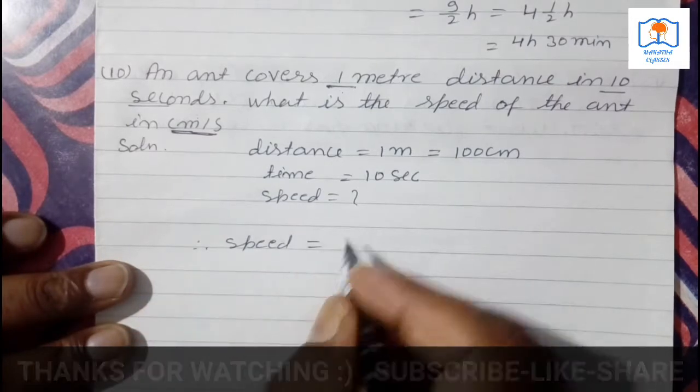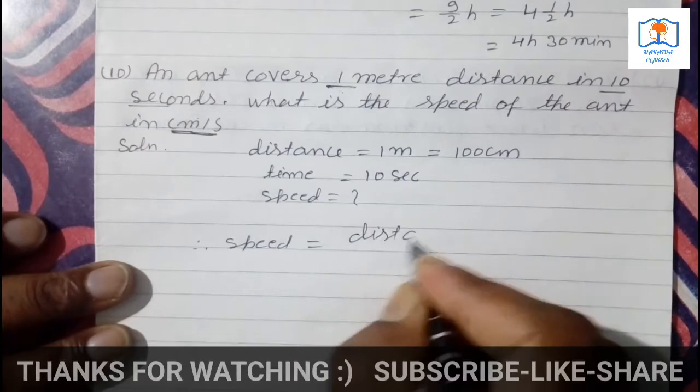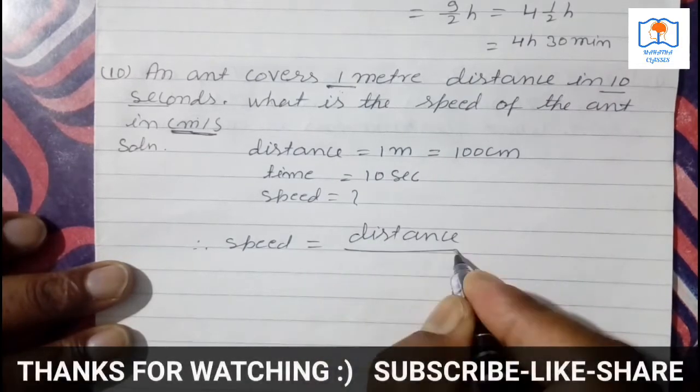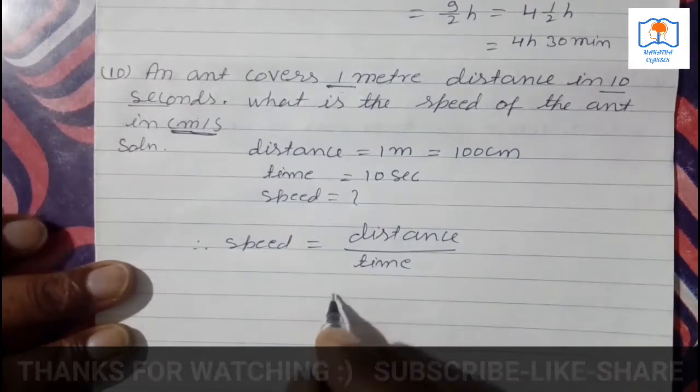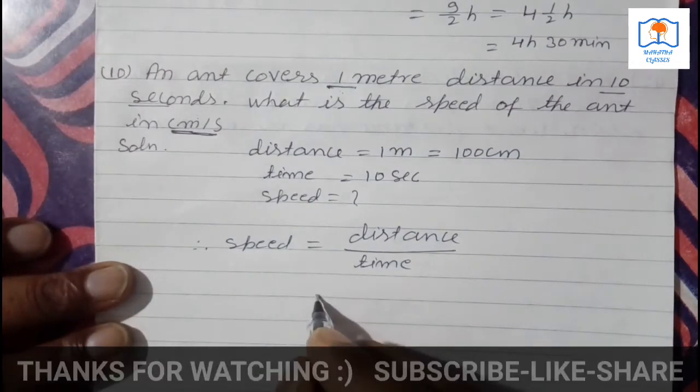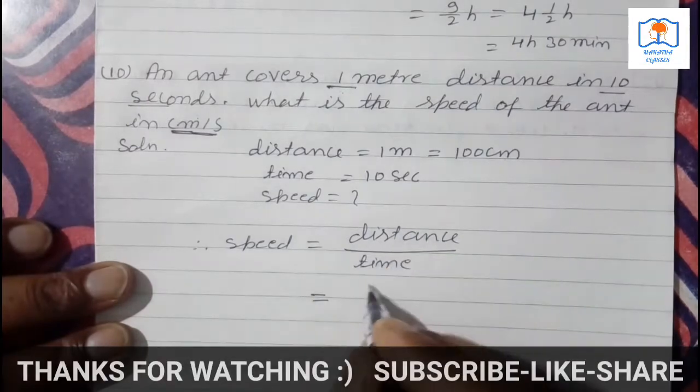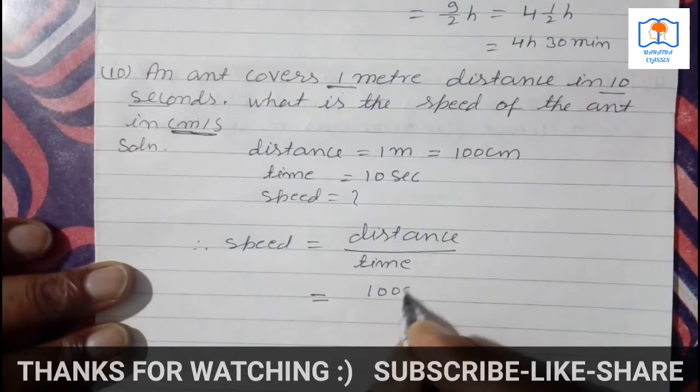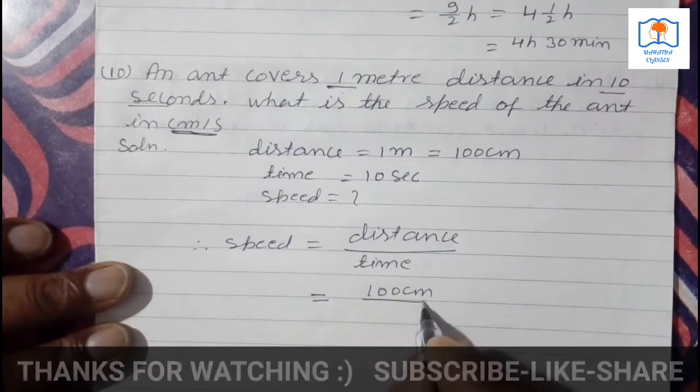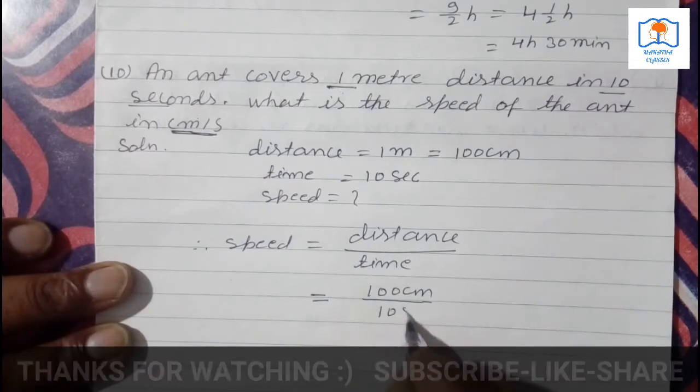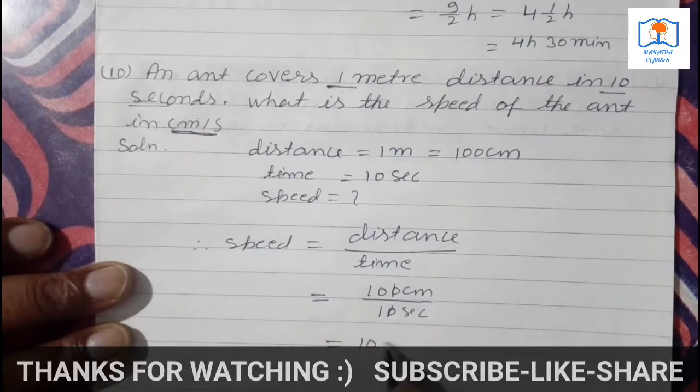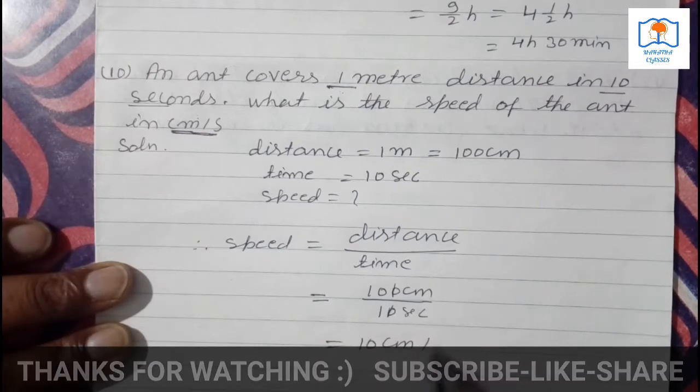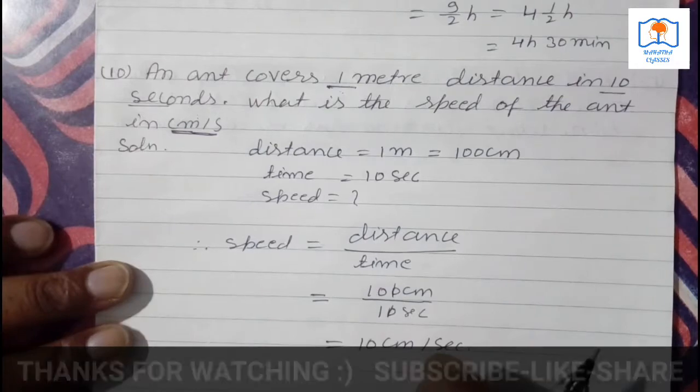You will find the speed formula. Distance by time shortcut: distance traveled divided by total time taken. Distance is how much? 100 centimeter divided by 10 seconds. So 10 will be divided. What will you find? 10 centimeter per second. And here is the answer.